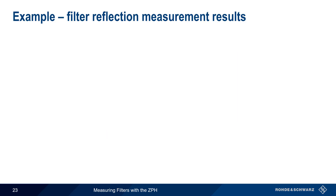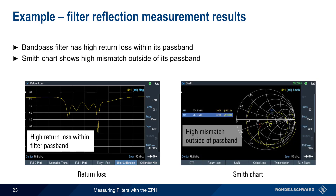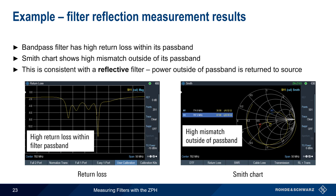Let's look at some filter reflection measurement results. Here we're looking at a bandpass filter which has a high return loss within the passband, meaning that power outside of the passband is being returned to the source. Changing from return loss to a Smith chart display, we can confirm a high degree of impedance mismatch outside of the passband — the trace lies closer to the outer edges of the Smith chart for the stopband frequencies. Both of these plots are consistent with a reflective filter that attenuates signals by returning power outside of the passband back towards the source.